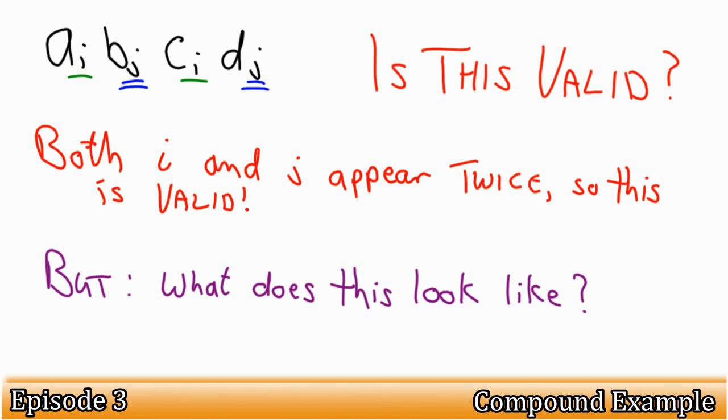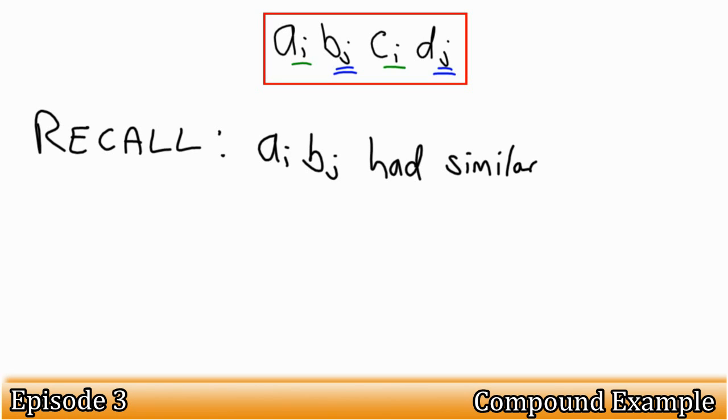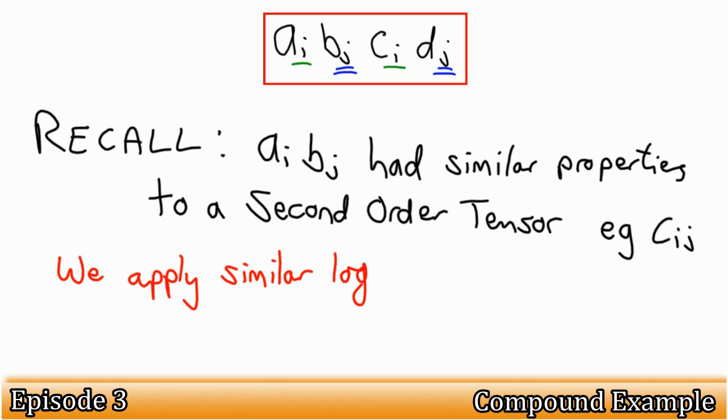But what does it look like? Recall in the last video that we compared a product of two first order tensors, Ai Bj, as having similar properties to that of a second order tensor? Well, the same principle applies in this instance.